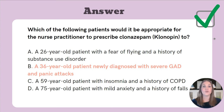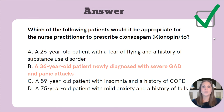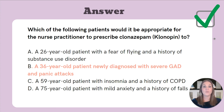Benzodiazepines should be reserved for acute cases of panic or severe anxiety while waiting for a medication like an SSRI to take effect, so it would be appropriate to prescribe clonazepam to that patient for a short duration. Answer C is not correct because respiratory conditions like COPD put patients at an increased risk of respiratory depression when using benzodiazepines. Answer D is also incorrect because we want to be very cautious prescribing benzodiazepines to older adults, especially someone with a history of falls. Answer A is not correct because of the patient's history of substance use disorder, given the risk of misuse associated with benzodiazepines.